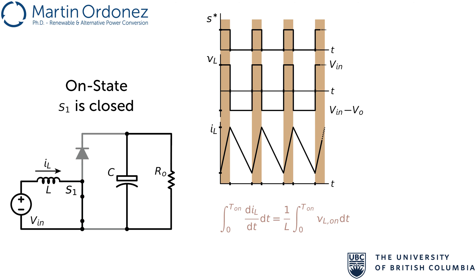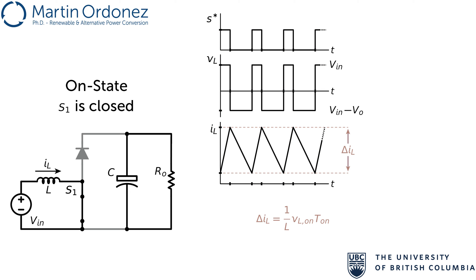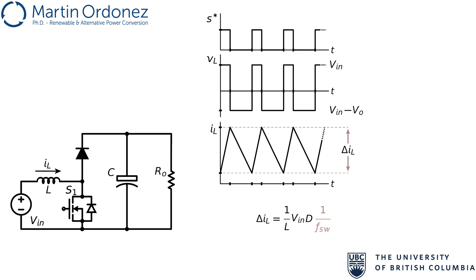If the inductor equation is integrated during the on time, the voltage is constant, so the amplitude of the inductor ripple is found to be equal to the voltage during the on time times the length of the on time, scaled by 1 over the inductor value. Plugging in the value of the inductor voltage during this time, V_in, and the value of the on time, the duty cycle times the switching period, and finally replacing the switching period with 1 over the switching frequency, gives an equation for the amplitude of the inductor ripple current as a function of the converter parameters. This equation can be used to find the ripple in the inductor, or it can be arranged to select the inductor value for a given desired current ripple.